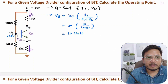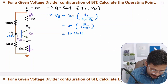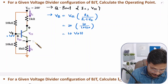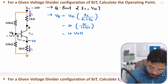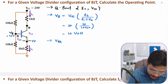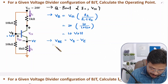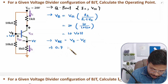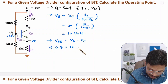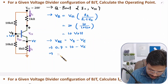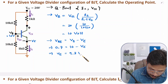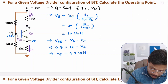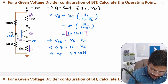Now we have VB equal to 10 volts. Based on VB, we can identify the emitter voltage VE. We know VBE equals VB minus VE, and VBE is 0.7 volts. VB is 10, so VE equals 10 minus 0.7, which is 9.3 volts.